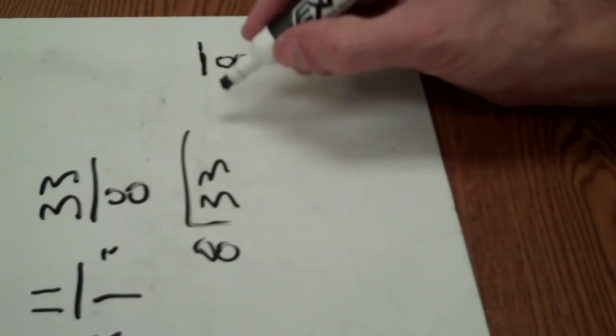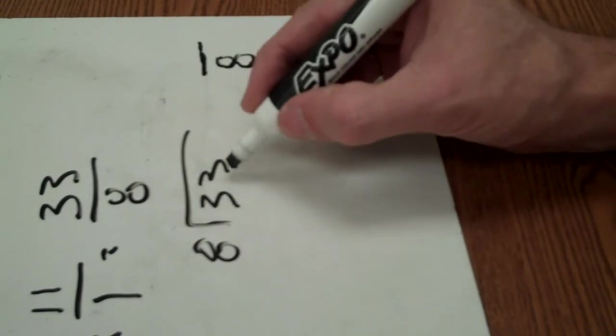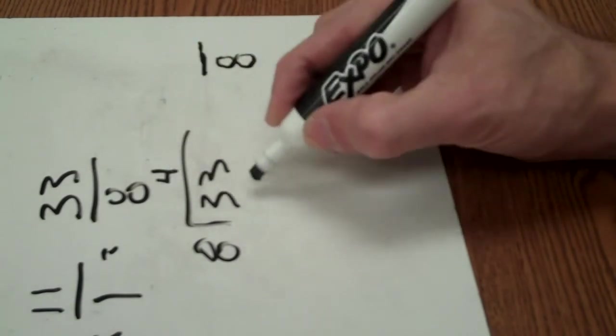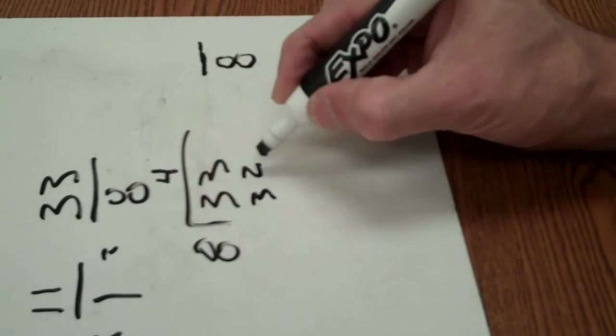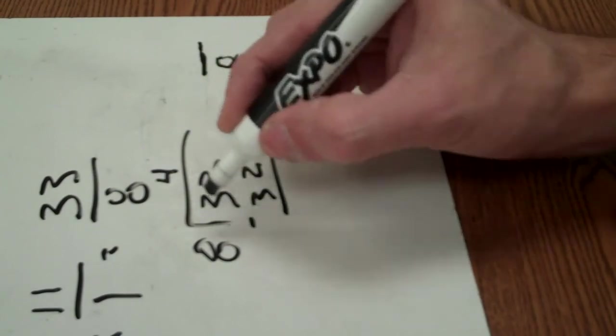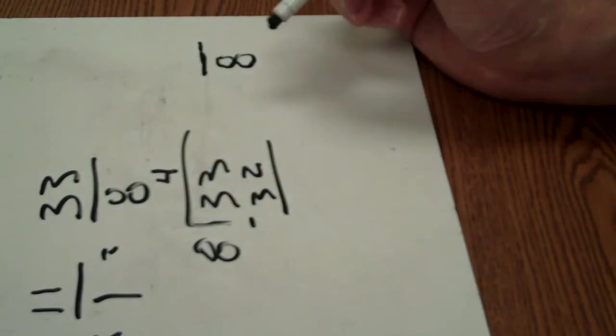Now, your whole number is going to go out front here. So, how many times will 8 go into 33? Well, 8 times 4 is 32. So, 8 will go into 33 four times.